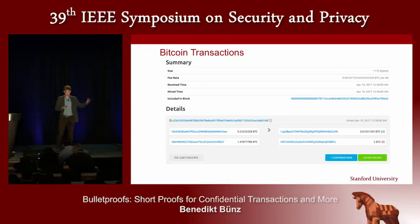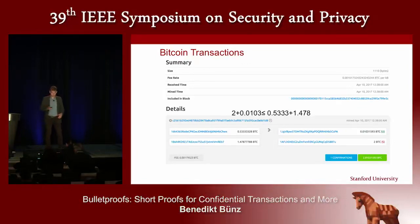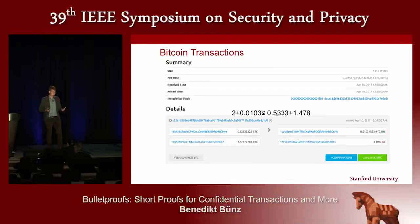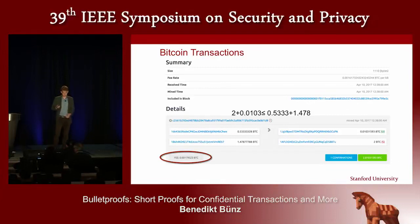Consider a Bitcoin transaction or most cryptocurrency transactions. They have a format where you have some inputs to the transaction and some outputs. One important quality is that the inputs are greater than the outputs, because no new money should be created in a transaction — there should be no inflation. The difference between the inputs and the outputs are the fees paid to the miners to validate the transaction.